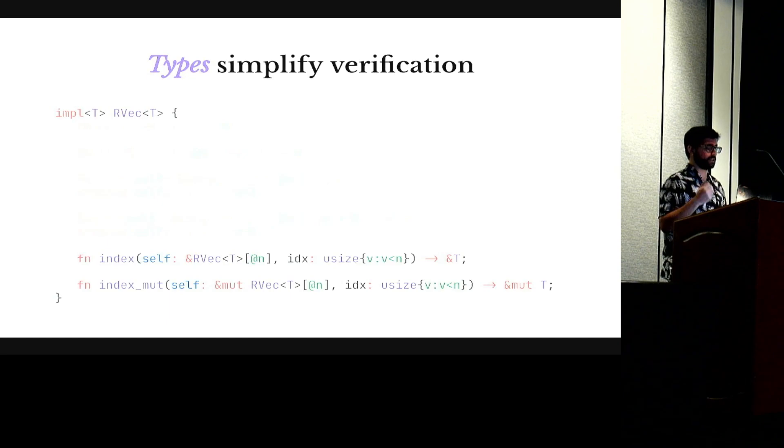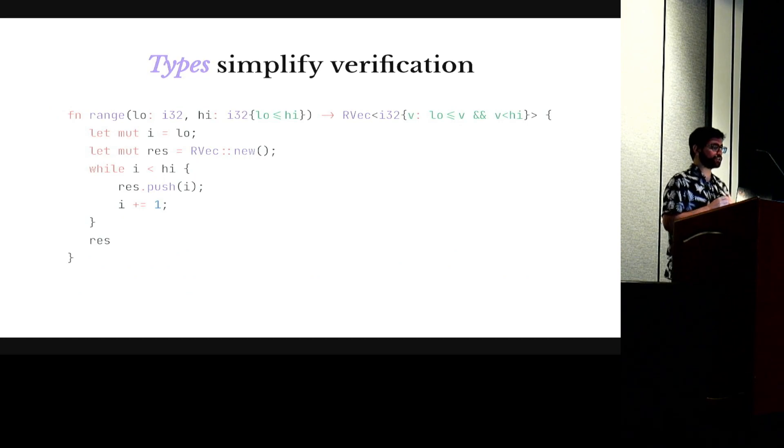Finally the function index and index mute have a precondition saying that the index has to be within bounds. This is an implementation of the function I commented on at the beginning that generates a vector with all the elements within a range. What I want to point out here is that Flux is able to verify this without any extra annotations. The only thing we need to verify this function is just to put the type for the function. From then Flux can verify the code automatically.